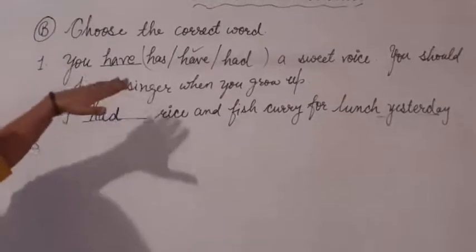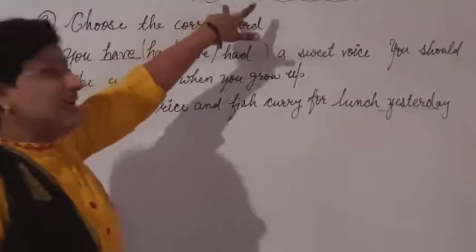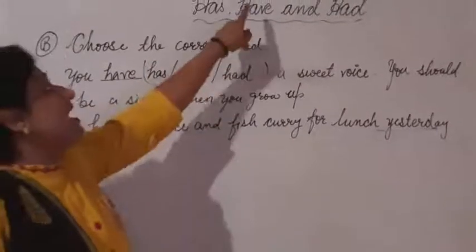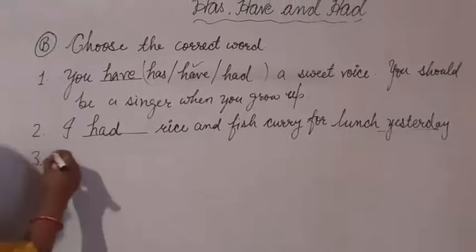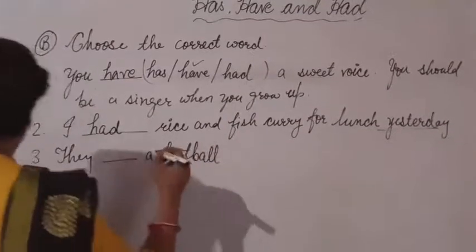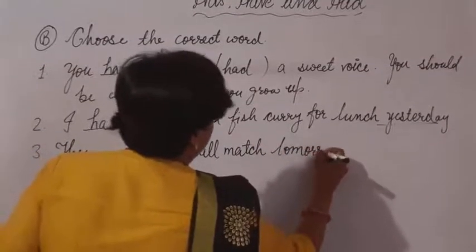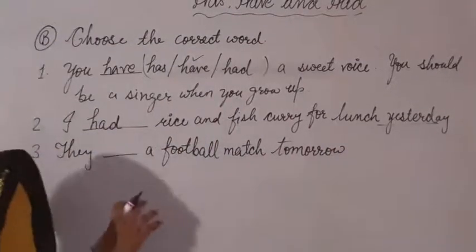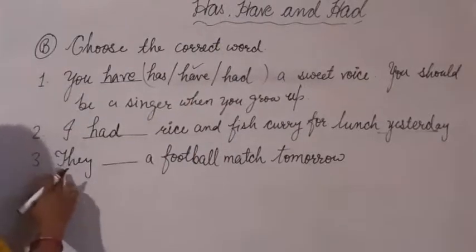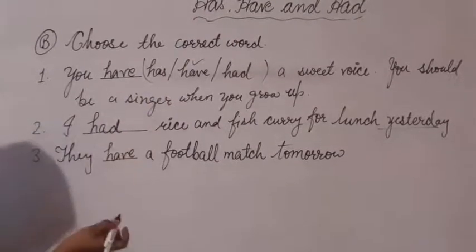Remember: first check the sentence for any past indicator. If there is no past indicator, choose from has or have — has for singular subjects, have for plural subjects. Third: 'They have a football match tomorrow.' No past indicator, they is plural, so we write have. They have a football match tomorrow.